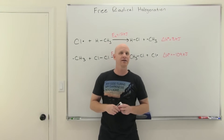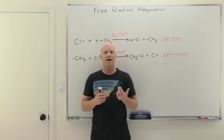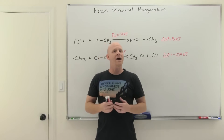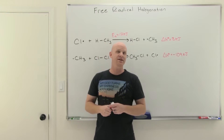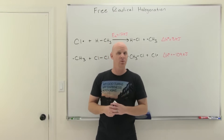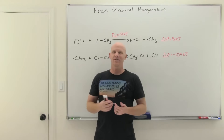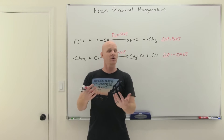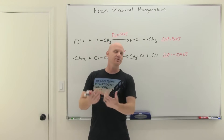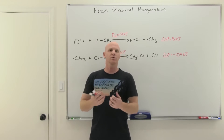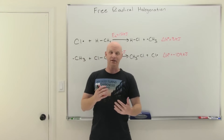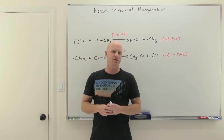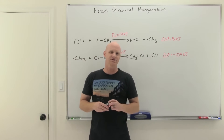In this lesson, we're going to go through the mechanism of free radical halogenation. We're going to find why bromination ends up being more selective than chlorination along the way. We're also going to find out that radical reactions are represented and occur differently than our normal organic reactions, so things are going to look a little bit different in the mechanisms of our free radical halogenation reactions.